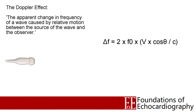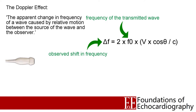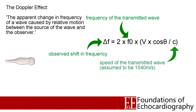Let's break this equation down to help us understand it. F0 is the frequency of the transmitted wave — that is the frequency that the ultrasound probe initially generated, and of course the software knows this. Delta F is the observed shift in frequency — that is the difference between the measured returning frequency and the known transmitted frequency, and using some clever maths the ultrasound machine can work this out. C is the speed at which the ultrasound wave was travelling. We make an assumption of an average speed and use 1540 metres per second in this equation.